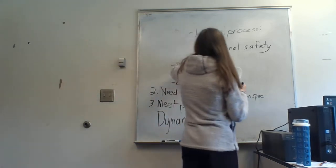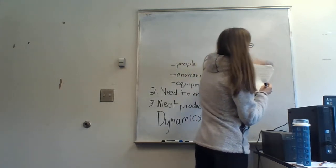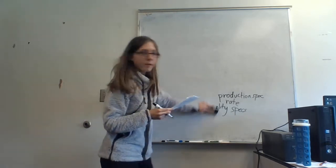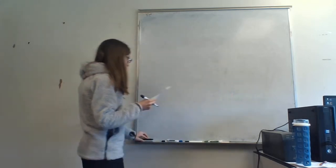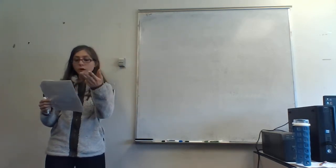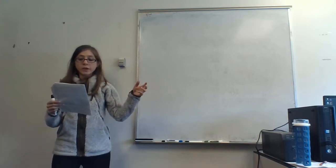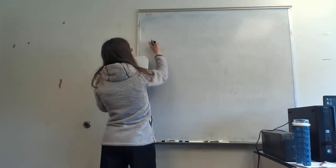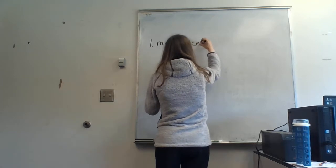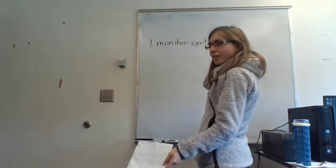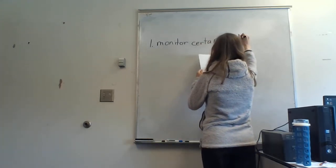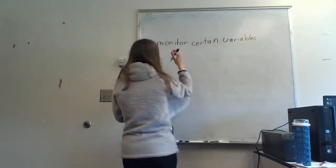Because things change with time in a chemical process, you probably have to measure them over time. We want to measure over time and see what's going on with respect to safety, production rate, and product quality. If we're not on target, we have to go back to our target. We have to monitor certain variables — we can't monitor everything — and choose ones that indicate to us how we're doing with respect to our objectives.